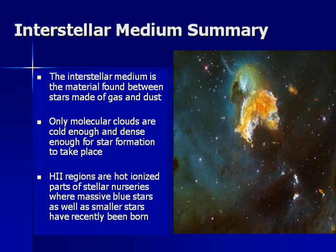The interstellar medium is any material found between stars. It's made of gas and dust, but only the molecular clouds — the densest, coldest parts — are able to produce stars. Because these dark molecular clouds are often very difficult to see, scientists will often look for emission nebulae — clouds that glow very brightly due to ultraviolet light from hot stars. Many of these H2 regions actually exist within the molecular clouds themselves, like the Orion Molecular Cloud Complex.